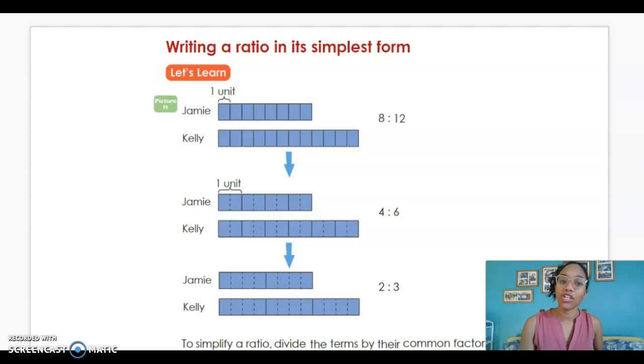Let's look at 2 to 3 and talk about why it is the simplest form. First, it follows the same order as our original ratio, 8 to 12. Second, it is the same value as our first ratio, 8 to 12. And third, it can't be divided any further.